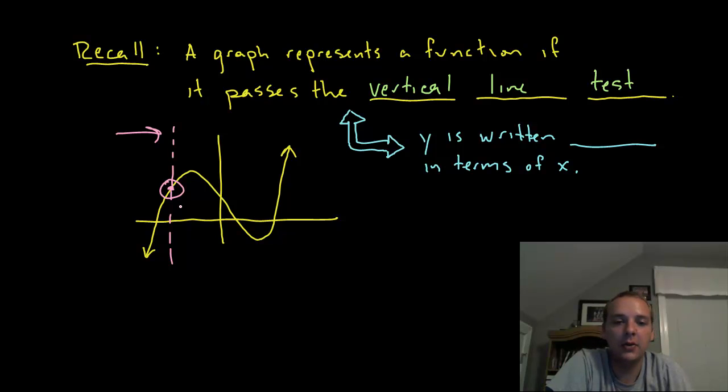Every x value can only be associated with one particular y value, and that's at the heart of the vertical line test. So if you look at this graph here, that would be a function, right? Because it crosses once, once, once, once, once.